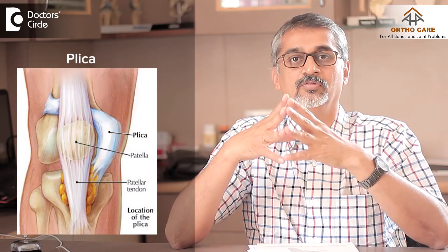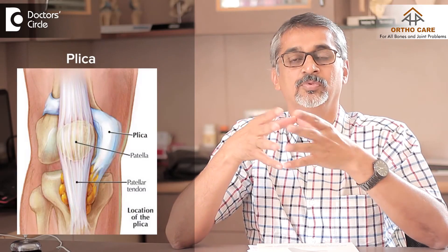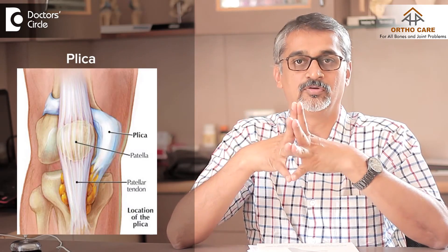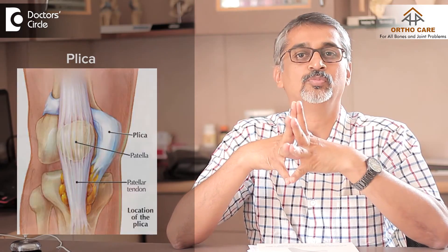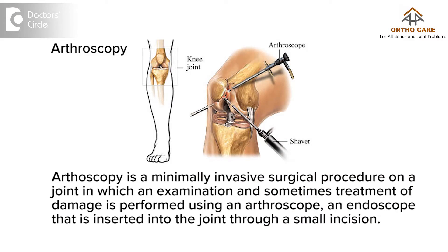The treatment depends on what the cause is. If it is a tight plicae or a tight tendon, we will have to release the plicae or lengthen the tendon to make it softer. If there are loose bodies in the joint, there are two ways of going about it. If it is a single loose body, we can remove it arthroscopically. If there are multiple loose bodies, we can also remove them arthroscopically, or sometimes it may need open surgery.